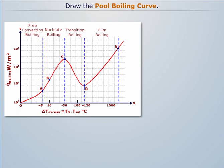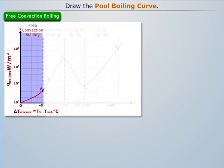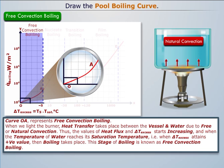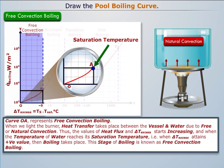Curve OA represents the stage of free convection boiling. When we light the burner, heat transfer takes place between the vessel and water due to free or natural convection. We can see that the values of heat flux and Delta T excess start increasing. When the temperature of water reaches its saturation temperature — that is, when Delta T excess attains a positive value — then boiling takes place. This stage of boiling is known as free convection boiling.